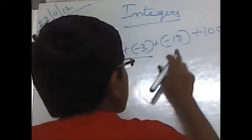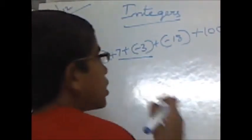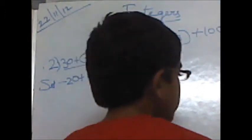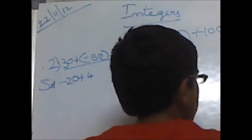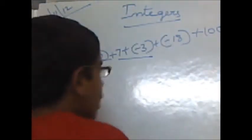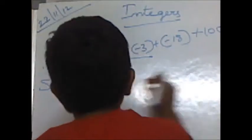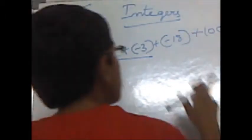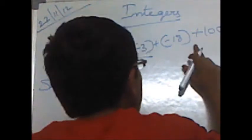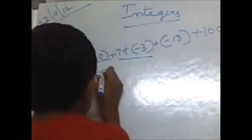Now we have to do minus 18 plus 100. Minus plus is equal to operation minus. So 100 minus 18 is equal to 82. The absolute values of minus 18 and plus 100 are 18 and 100 respectively. Since 100 is greater than 18, 100 has the plus sign — answer is plus 82.